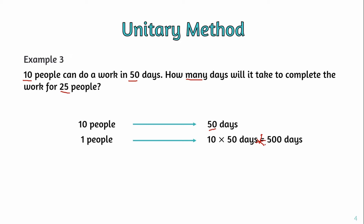So 10 people take 50 days, which gives a total of 10 times 50, equal to 500 person-days. According to the question, the number of people is 25. Since the number of people is more, the days will be reduced. So 500 divided by 25 equals 20 days.